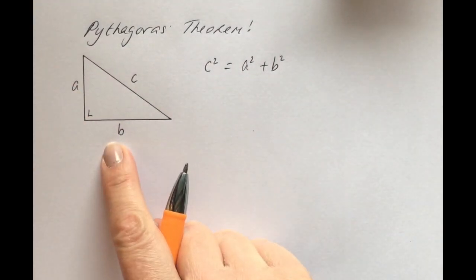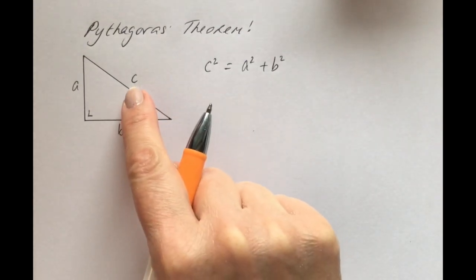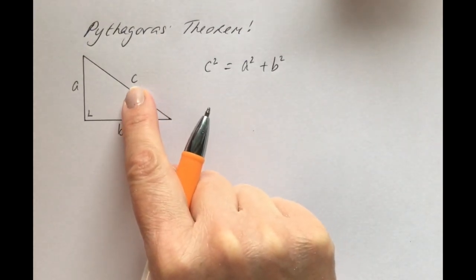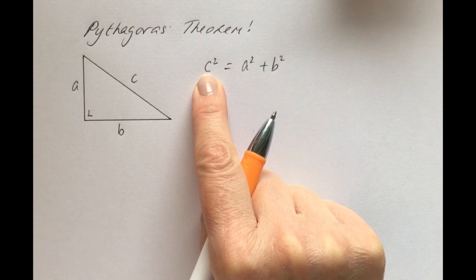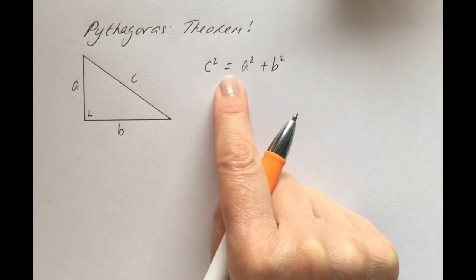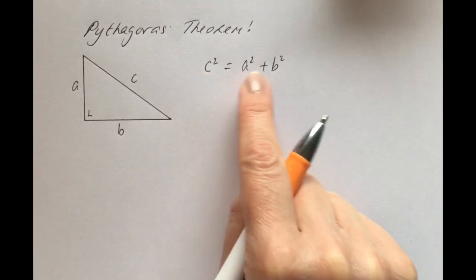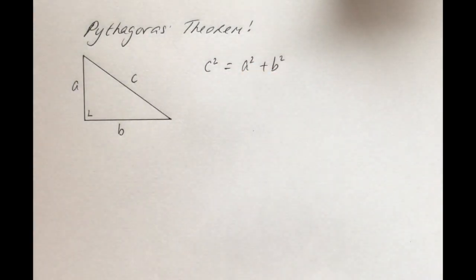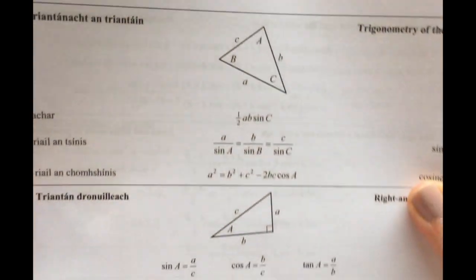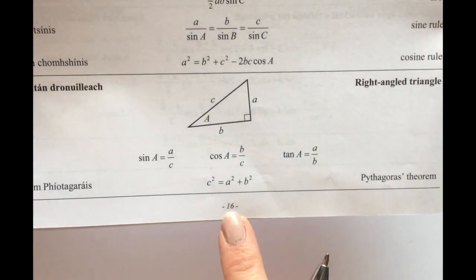That side squared is always equal to the two other sides squared and added together. So it always has to be the longest side squared — the hypotenuse squared is equal to the other two sides squared and added together. That's what the theorem states, and that theorem is on your log tables on page 16.